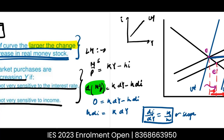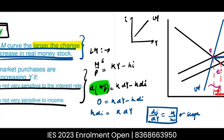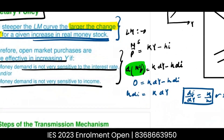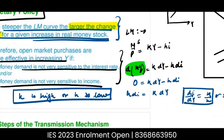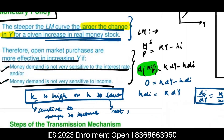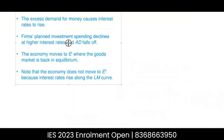The slope of the LM curve is K/H. The LM curve is steeper when this slope is larger — i.e., when K is high or H is low. K being high means money demand is sensitive to changes in income. H being low means money demand is not sensitive to changes in the interest rate. So a steeper LM curve implies money demand is sensitive to income but not very sensitive to the interest rate.